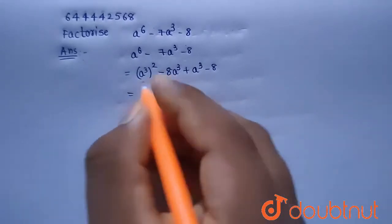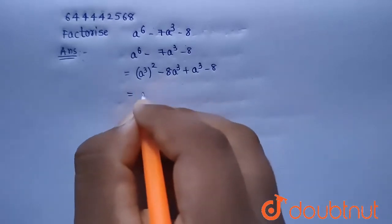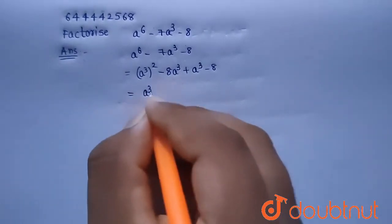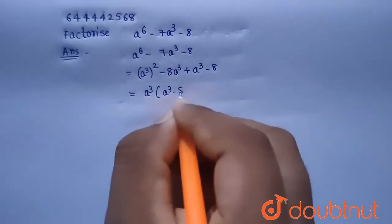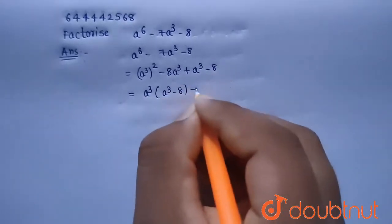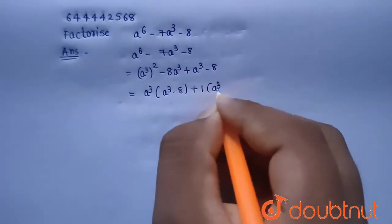So I am taking out a^3 common because (a^3)^2 can be written as a^3 into a^3. So a^3(a^3 minus 8), and I am taking plus 1 common from the last two terms. So a^3 minus 8.